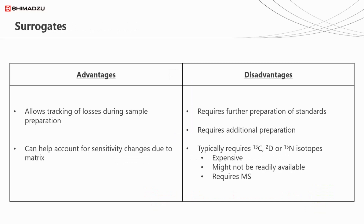The advantages of using surrogates are clear — it allows us to track losses during the sample preparation phase and can also help account for sensitivity changes due to things like matrix interference. The disadvantage is that further sample preparation steps are required. It's also essential that the surrogate acts in the same way as your target analyte. The only way to guarantee this is to use isotopically labelled surrogates, but these are expensive, can be difficult to source, and tend not to be amenable for GC analysis, as you're more reliant on difference in mass. In some cases, it might be possible to chromatographically resolve the target and surrogate, but more often than not you'll find yourself needing a GC-MS.